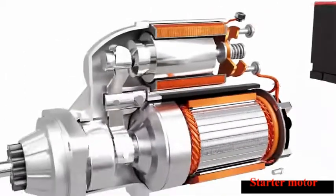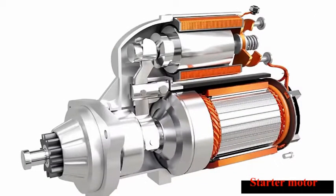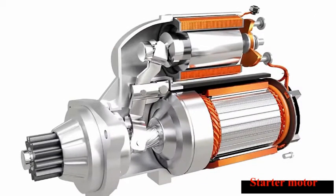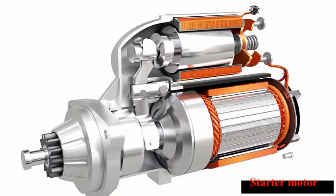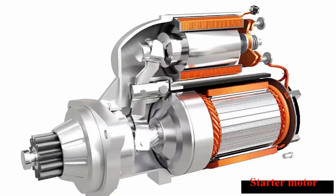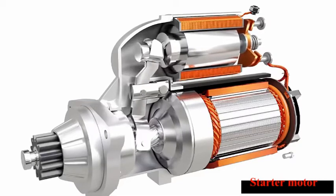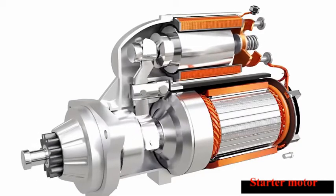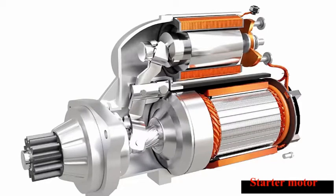The solenoid has another crucial function. It helps to slide the pinion and engage it with a flywheel before the motor starts to spin. As the pinion slides towards the flywheel, it slightly rotates on its axis as shown here. This rotation is achieved by using a helical spline. This rotation helps meshing the pinion with the flywheel more conveniently.